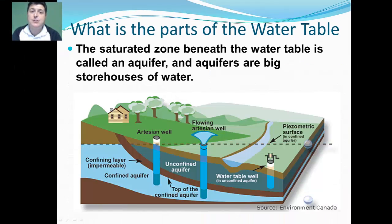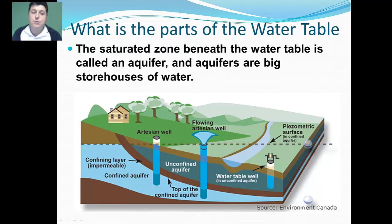That complete zone of saturation we refer to as an aquifer — aquifers are basically big storehouses of water. Some aquifers are what we call unconfined aquifers: they sit near the surface and are separated from it only by permeable layers of soil, meaning water can come in from the surface and get into that unconfined aquifer.